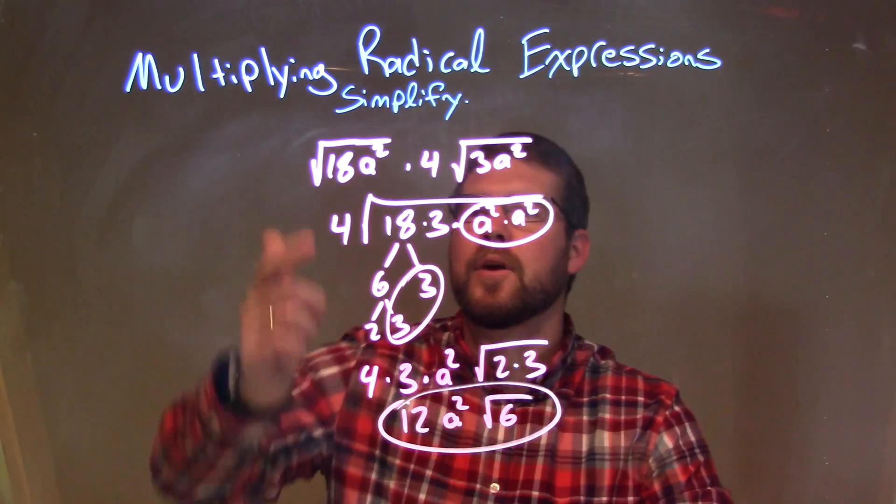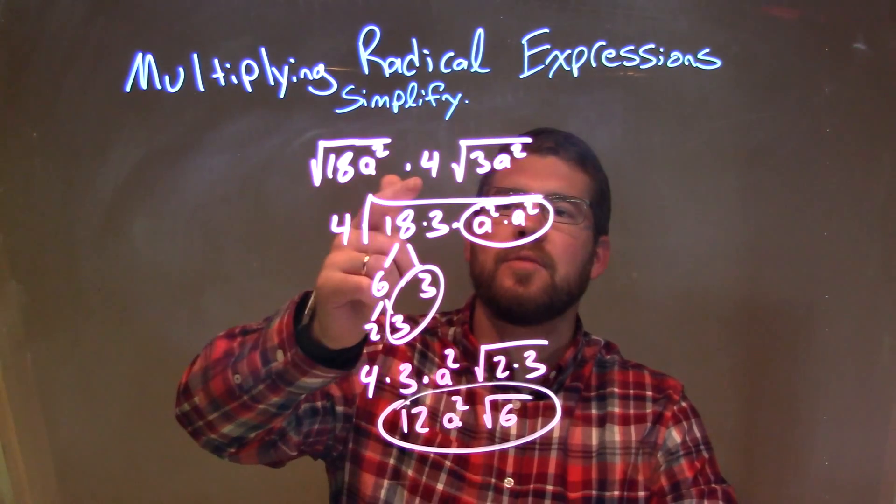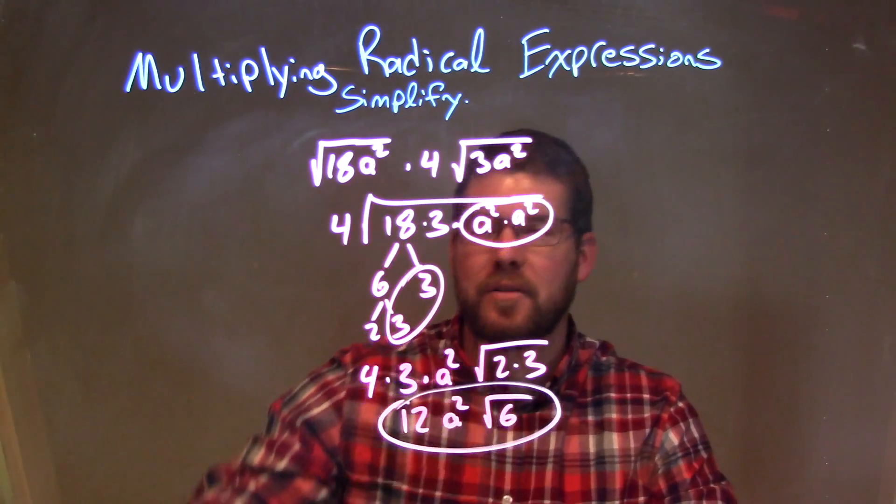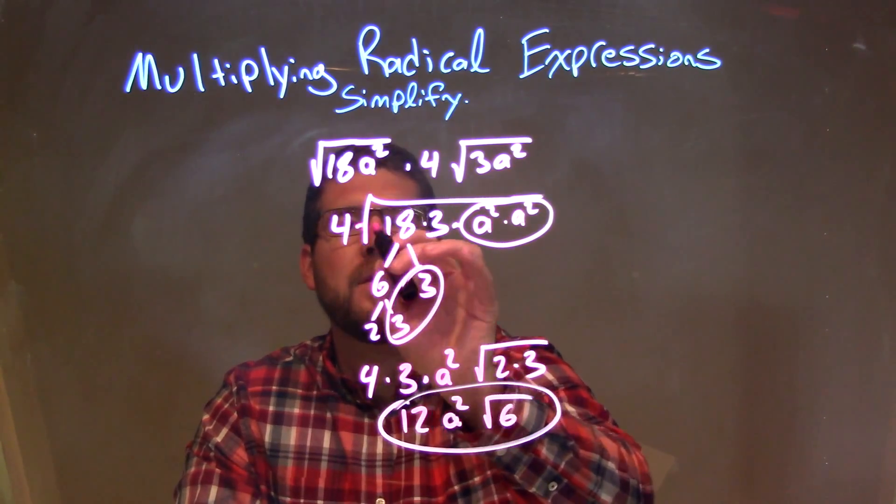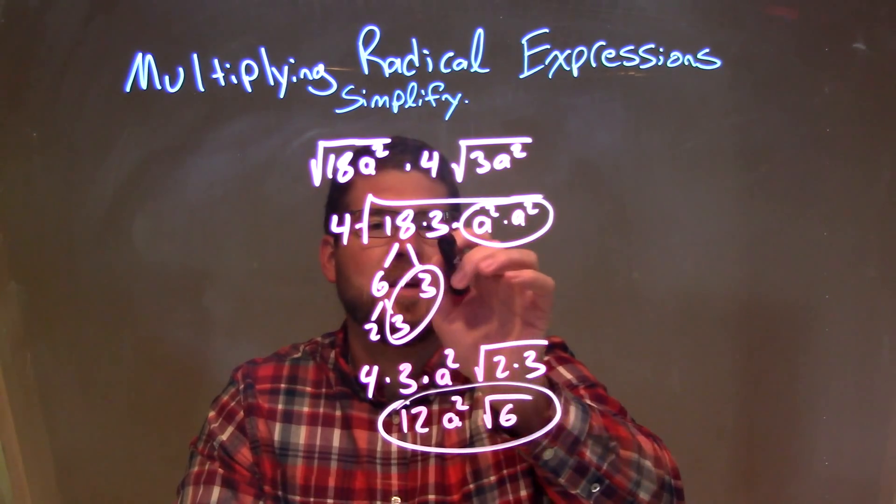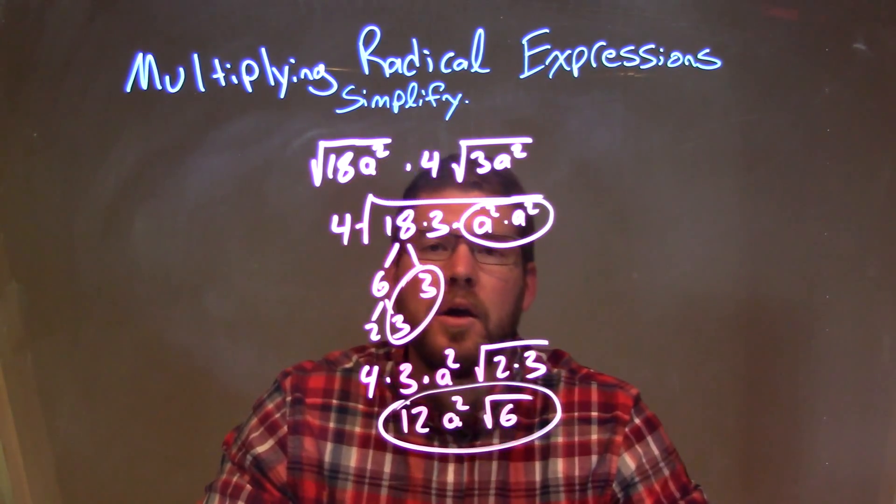So let's recap. We're given the square root of 18a² times 4 times the square root of 3a². We combine this to be one big square root with the 4 on the outside. So 4 times the square root of 18 times 3 times a² times a².